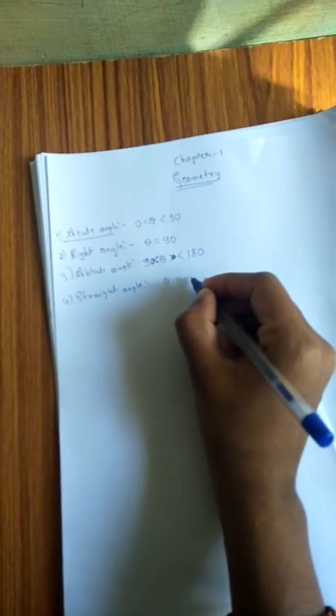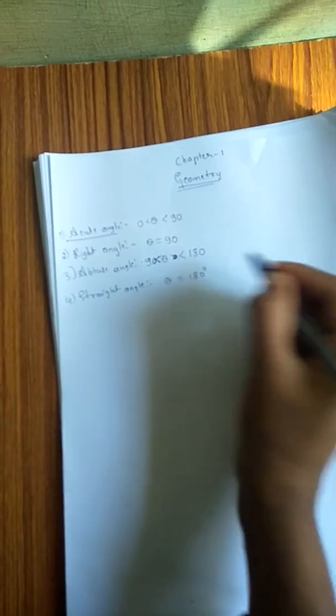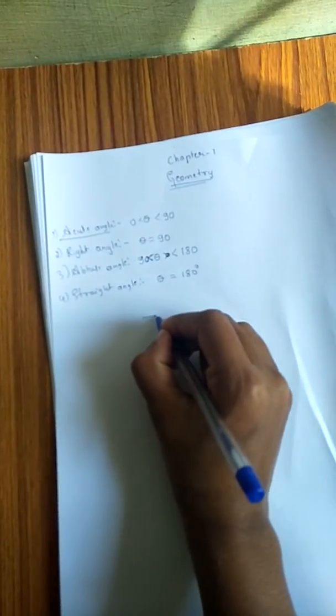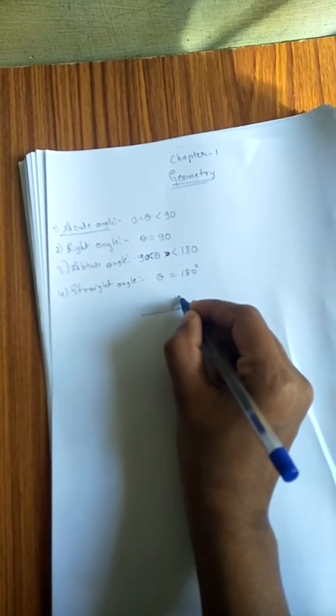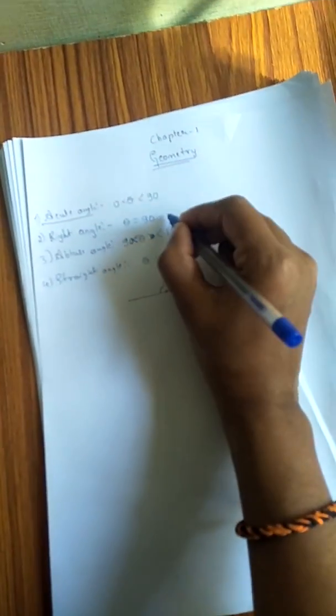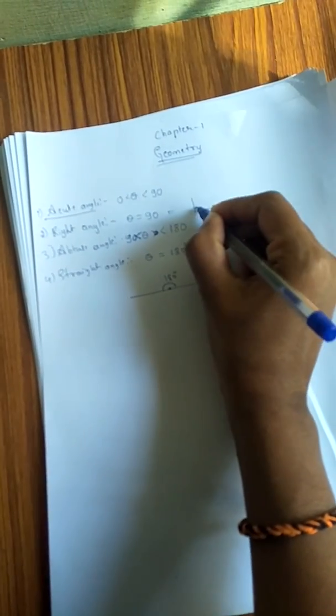equals to 180 degrees. Right angle is 90 degrees.